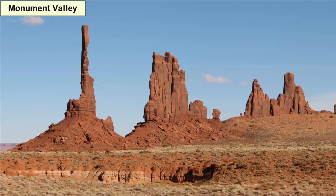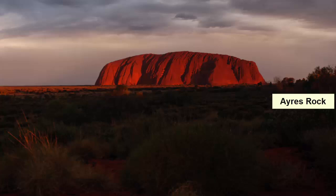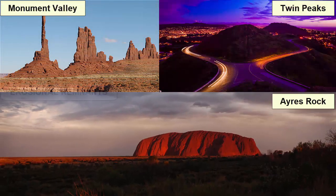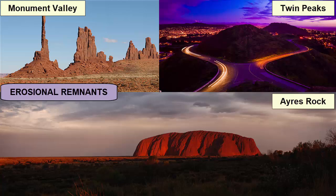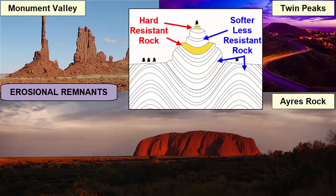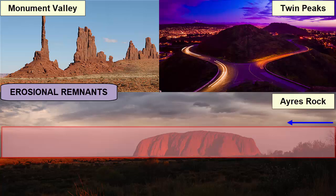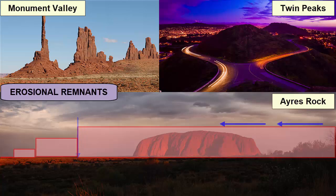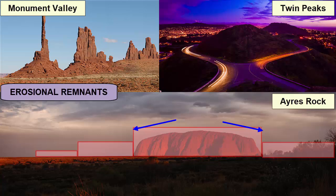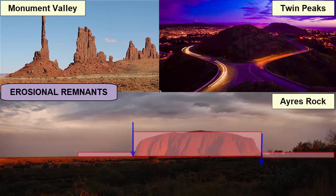Monument Valley in Arizona, Twin Peaks in San Francisco, Ayers Rock in Australia. What kind of mountains are these? Erosional remnants. When erosional forces such as running water remove material from a landscape, they will preferentially remove first the rocks that are softest, leaving behind the most resistant rocks. When an area has a mixture of soft and hard rocks, after erosion the hard rock can remain standing above the surrounding terrain. When an area is made almost entirely of hard rock, erosion is slow and concentrated where there are cracks or holes, and over time erosional remnants are left behind like islands in the landscape.